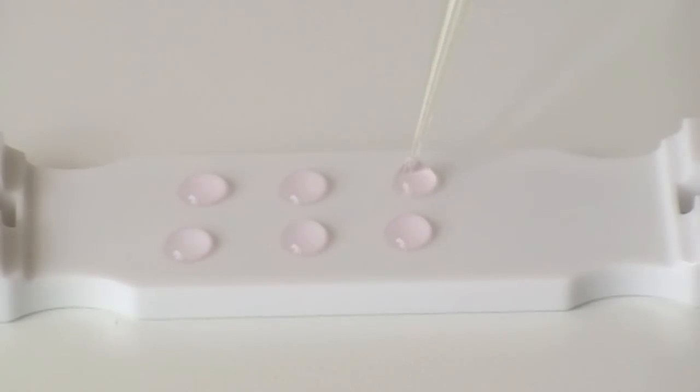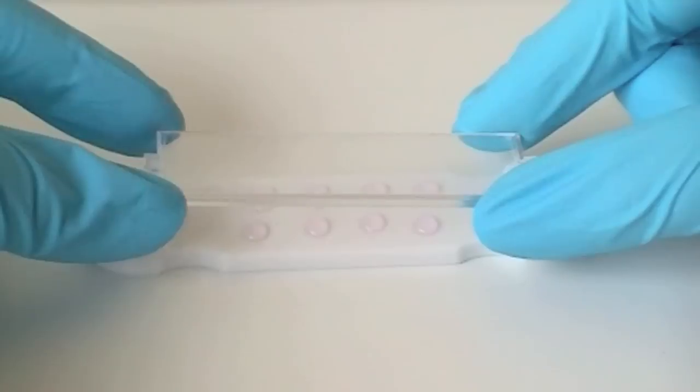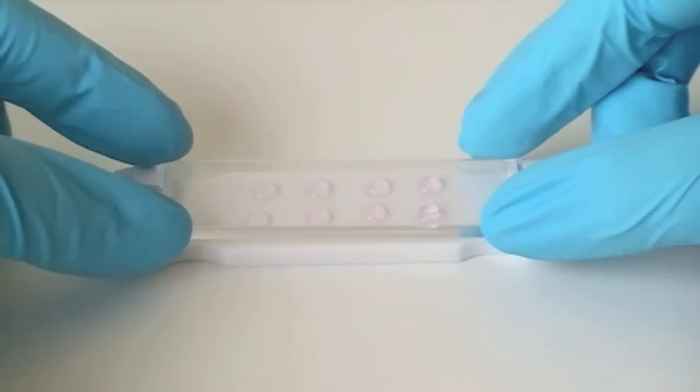When you are finished, use the top transparent slide to close the Q-Gel 3D disc caster carefully and press it firmly to flatten the drops and make little discs. Remember you have 5 to 6 minutes to work with the solution before it becomes a gel.